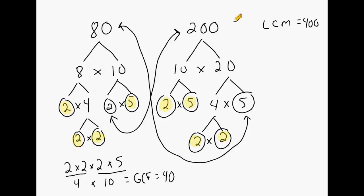What we should understand from this lesson is that you can take any composite number and break it down into all prime numbers. You can then take any two composite numbers, perform a factor tree for each one, and use the prime numbers at the bottom to find not only the greatest common factor but the least common multiple as well.